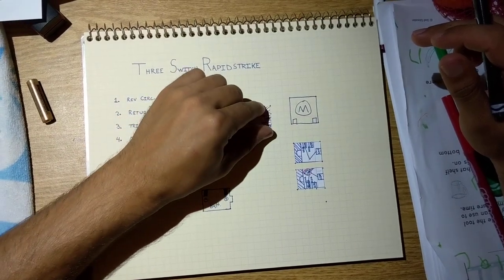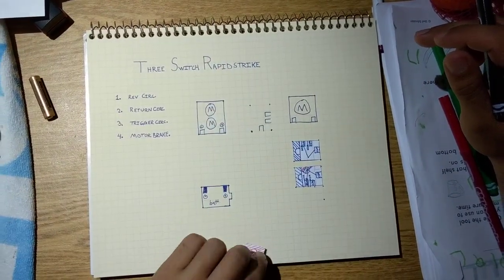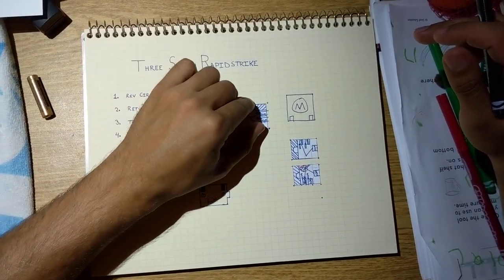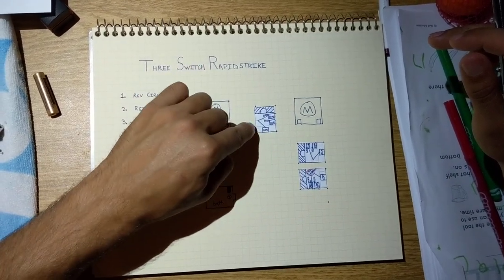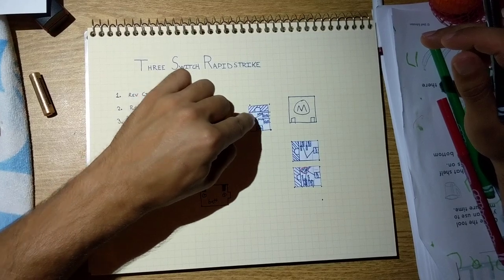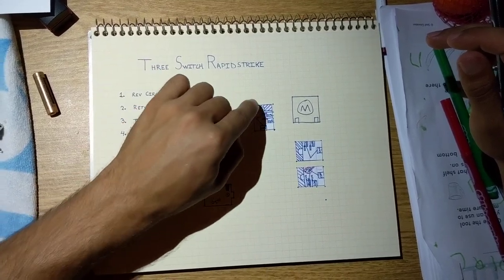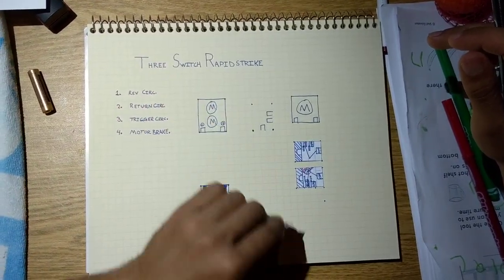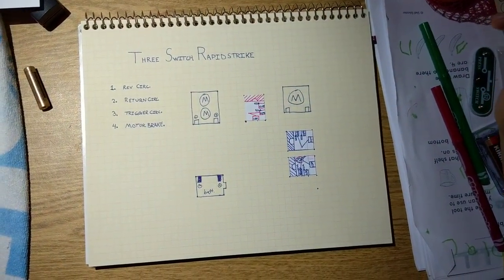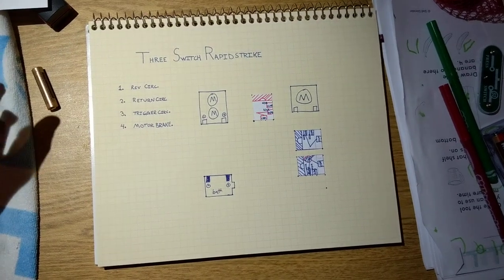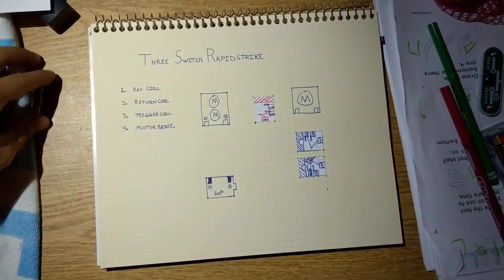It shows you the line between the common and the normally closed circuit, and the line between the common and the normally open circuit in the unactivated stage and the activated stage. Whether or not that's the right terminology, that's pretty much how it works to me, that's how my mind sees it.